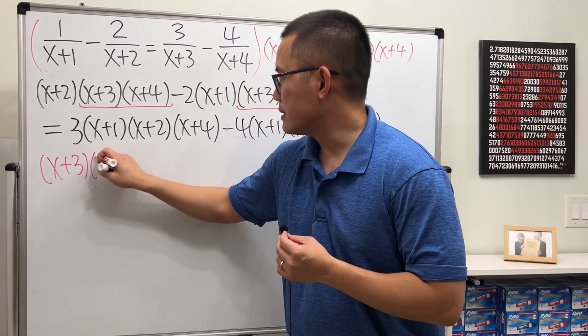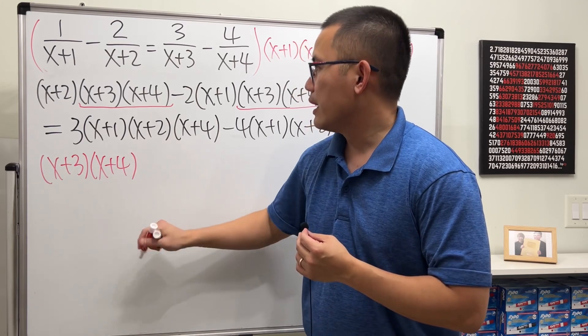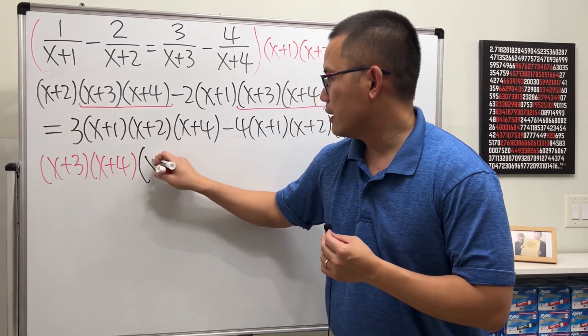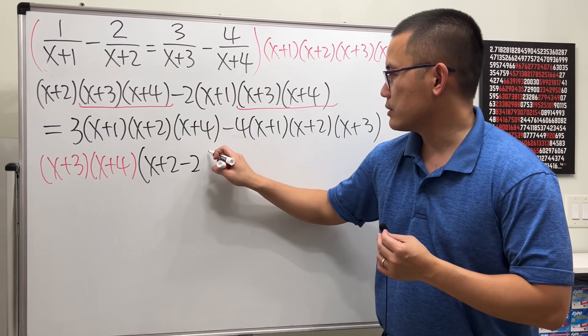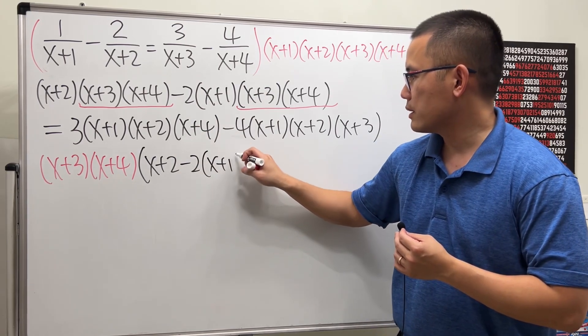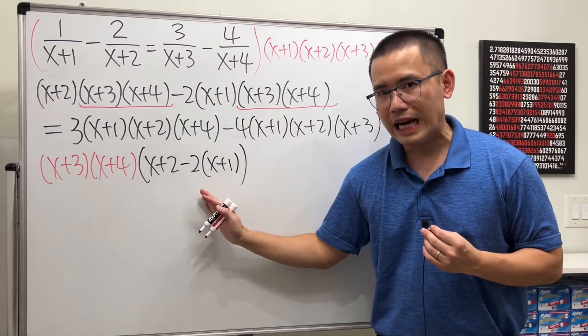And then, we will have x plus 2 here and then minus 2. And let me just write it down, minus 2 times x plus 1. So that's what we have on the left-hand side.